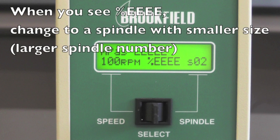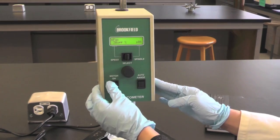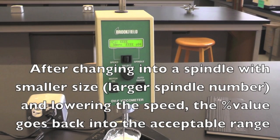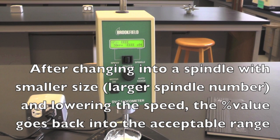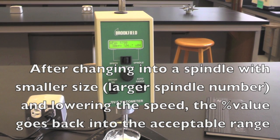If you see EEEE on the reading, it means the sample is too viscous for the spindle and you will need to use a smaller spindle. Every time when you change the spindle, always remember to change the spindle number in the viscometer.